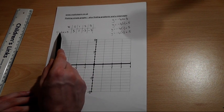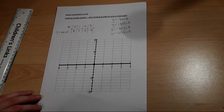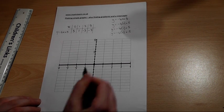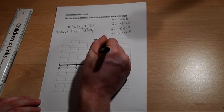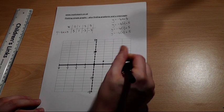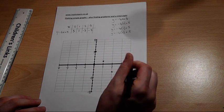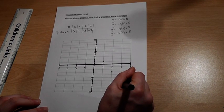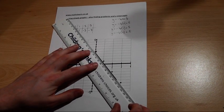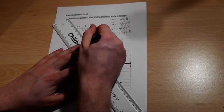We now plot these coordinates. x is 0, y is 5. x is 1, y is 1. x is 2, y is minus 3. x is 3, y is minus 7. We then draw a line through those points.